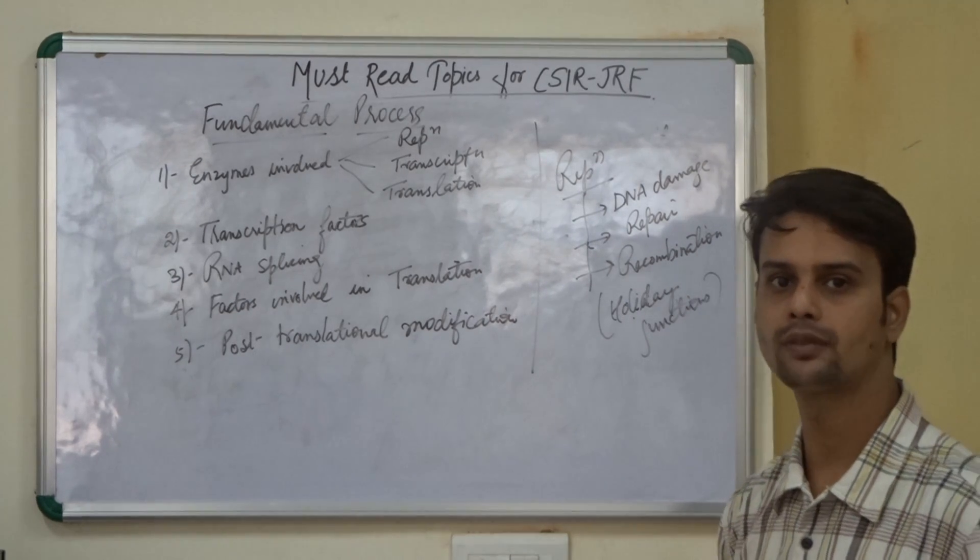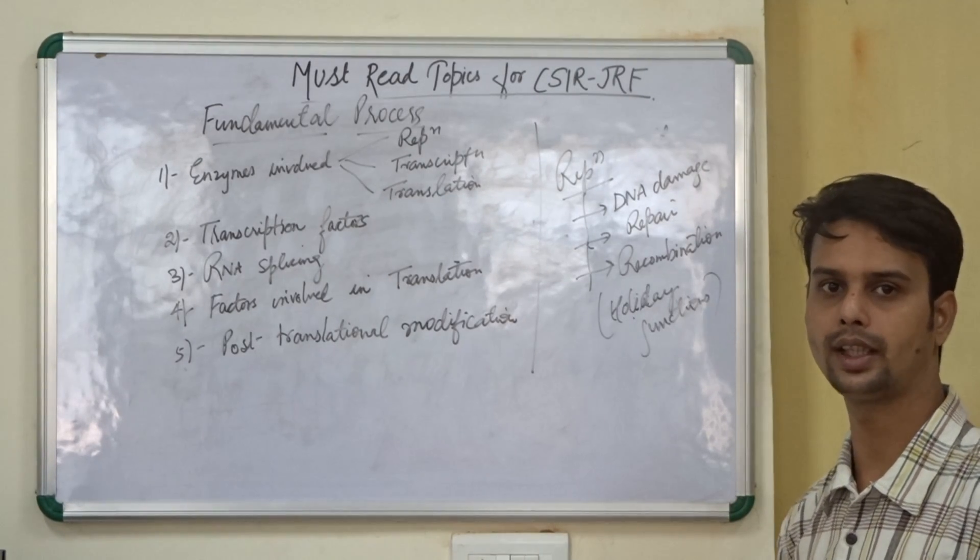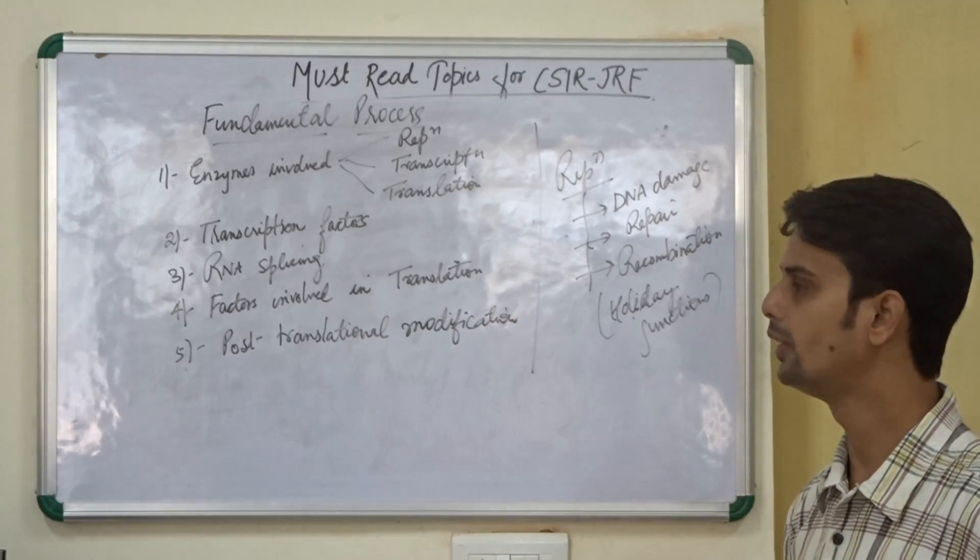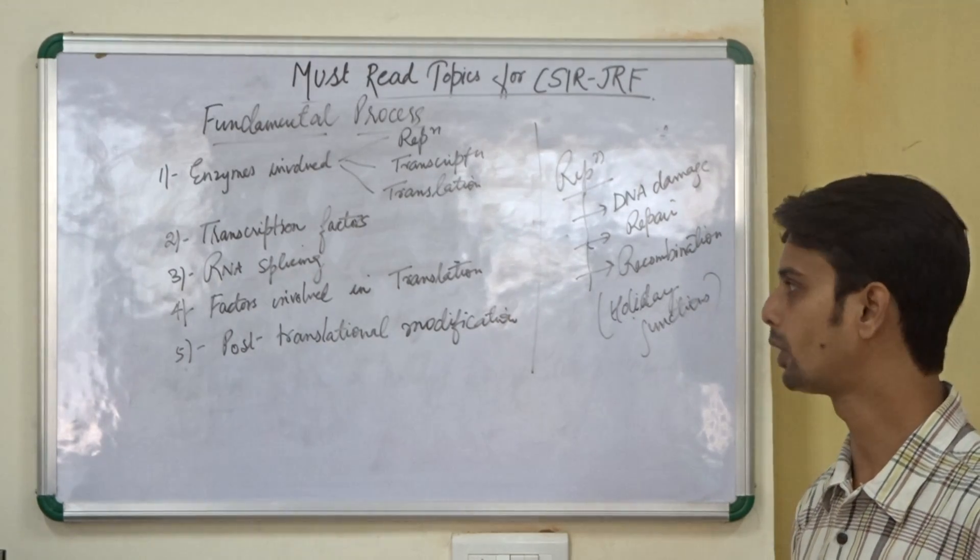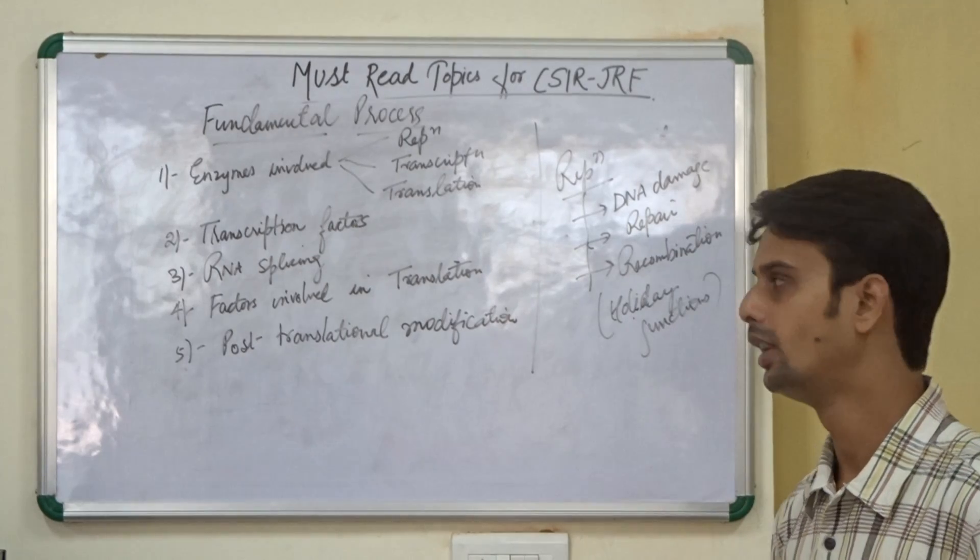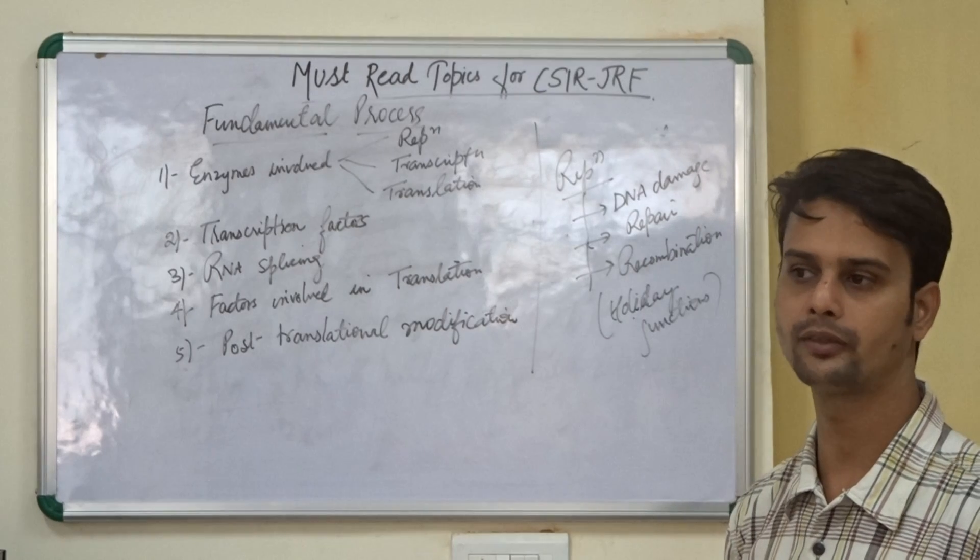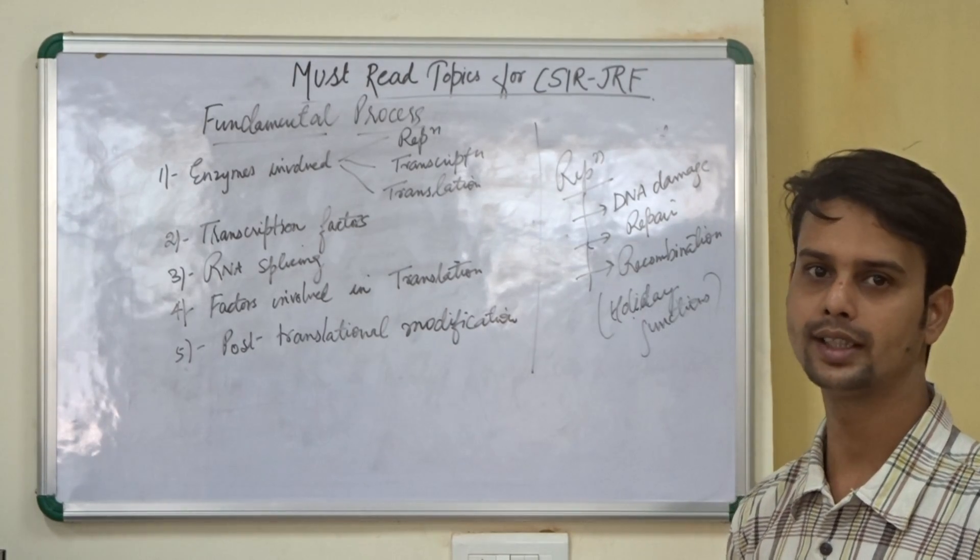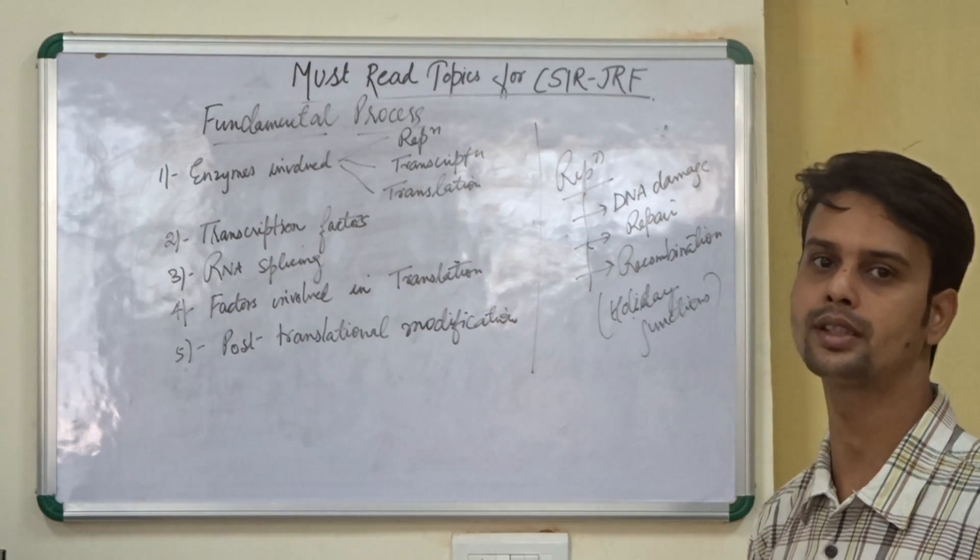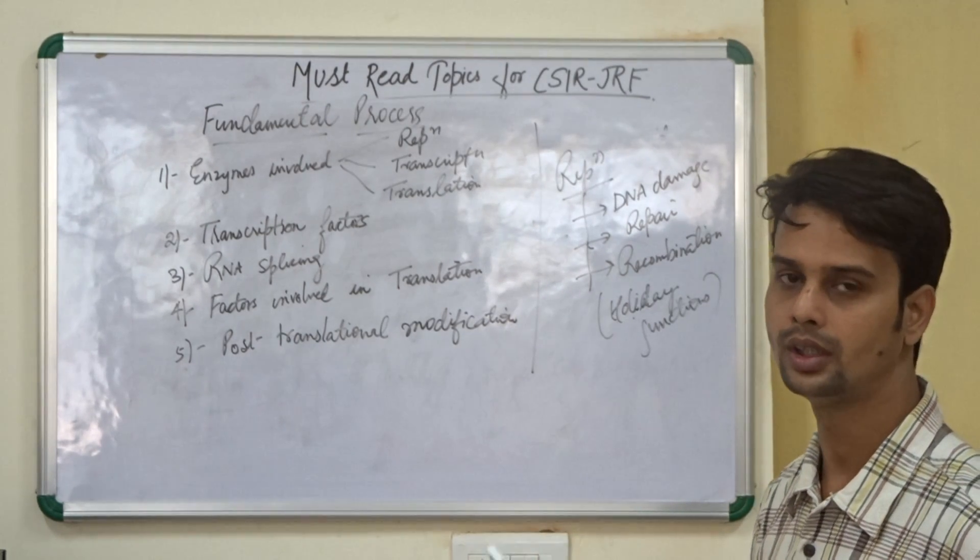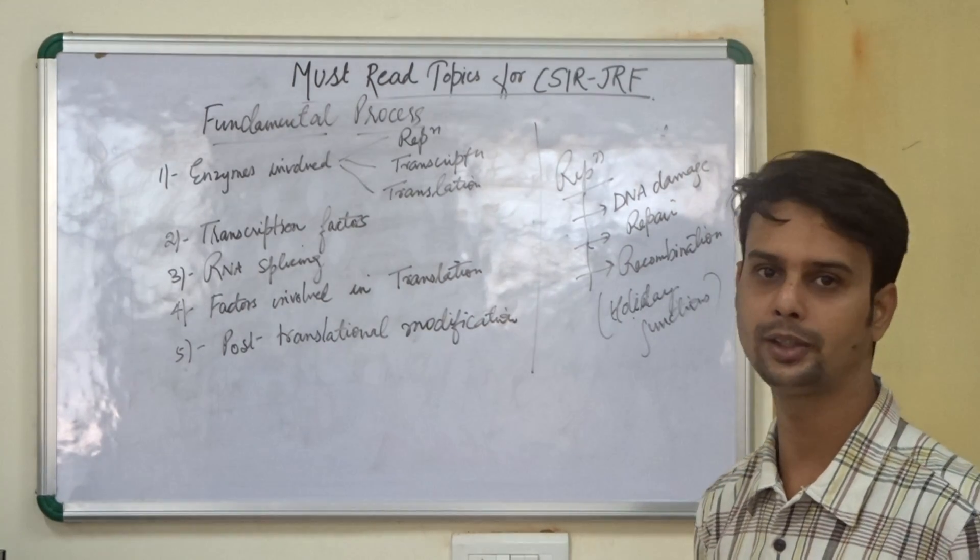These are some of the important topics from these units that I have told you. The next part will be taken up by another instructor. He will be telling you about the next three units or four units, the important topics from those units. There is no shortcut to success. There is no shortcut to CSIR. But once you have prepared for CSIR, you must be knowing about these topics. And you have missed, in case you have missed some of the topics, you can go through and take your chance. Best of luck.